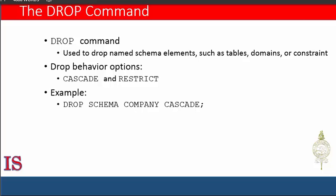If a base relation within the schema is no longer needed, the relation and its definition can be deleted by using DROP TABLE. Note that the DROP TABLE command not only deletes all the records in the table if successful, but also removes the table definition from the catalog. If it is desired to delete only the records but leave the table definition for future use, then the DELETE command should be used instead of DROP TABLE.